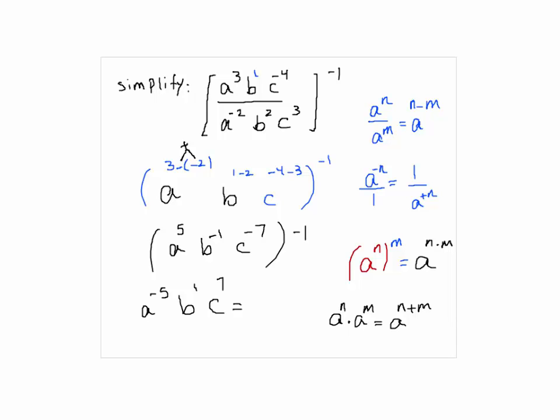So now we need to move A to the power of negative 5 to the bottom of the fraction to make it positive and leave the other two terms alone. Now here everything is in terms of positive exponents, and that's how you simplify that.